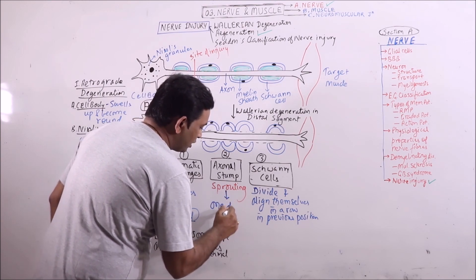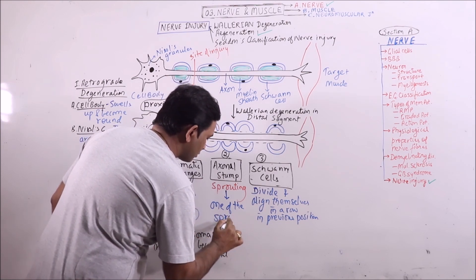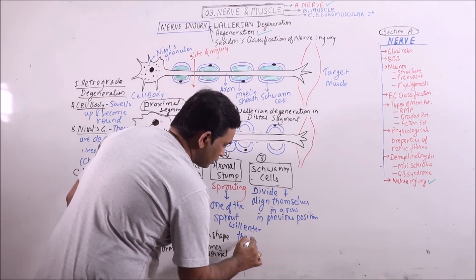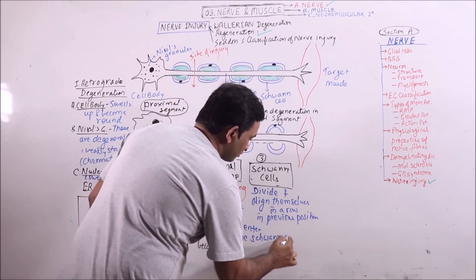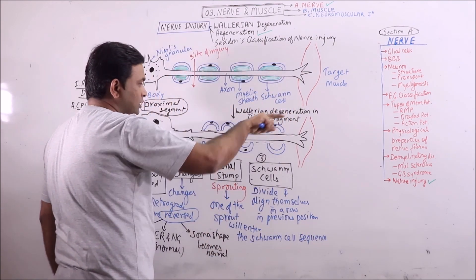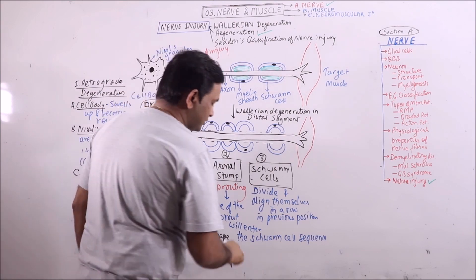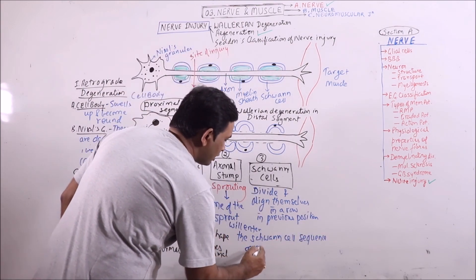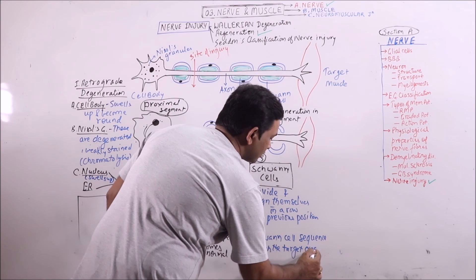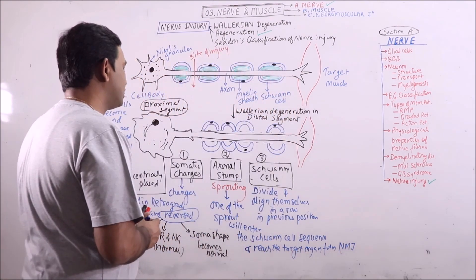So one of the sprouts will enter the Schwann cell sequence. In between the Schwann cells, it is not penetrating the Schwann cells but it is crossing the cavity or entering the cavity surrounded by Schwann cells. The Schwann cell sequence and reach the target organ and form neuromuscular junction there.